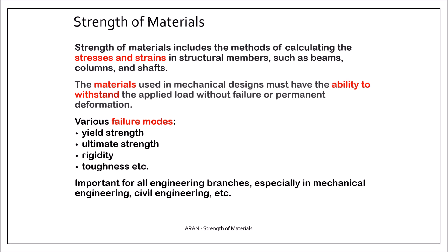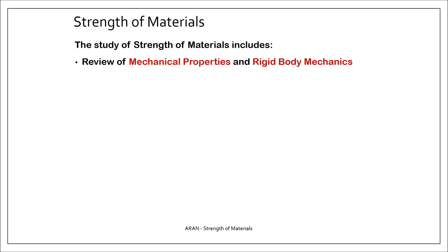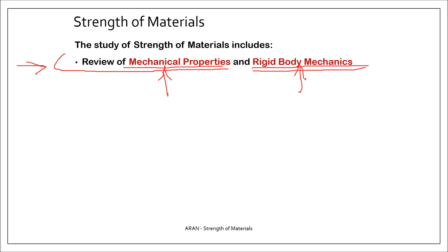In summary, we can say that for all engineering branches strength of materials is important, especially for mechanical and civil engineers. In the strength of materials course, we start with the review of mechanical properties of materials and rigid body mechanics. This is information you have obtained in your materials science course and your statics course, and it is essential to be successful. If our review is not enough, we recommend you to make an extensive review of these topics.